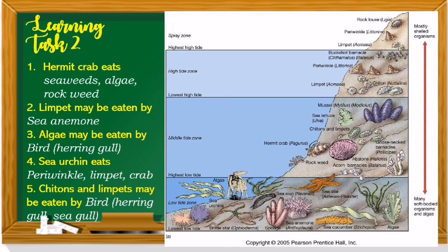Here is the picture for learning task number 2. For hermit crab — what will they eat? They will eat seaweeds, algae, and rockweed. The hermit crab is part of the middle tide zone. He will be eating seaweeds, algae, and rockweed.